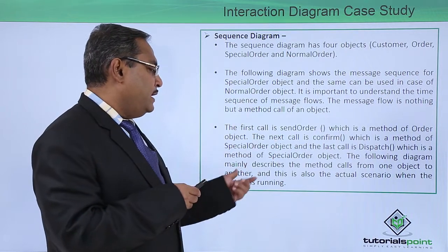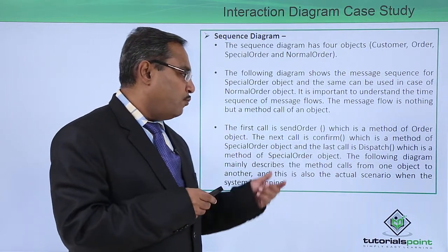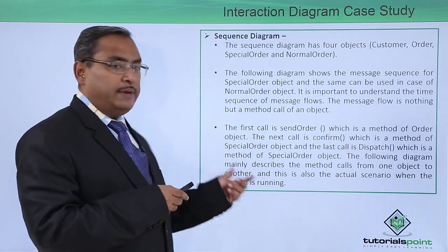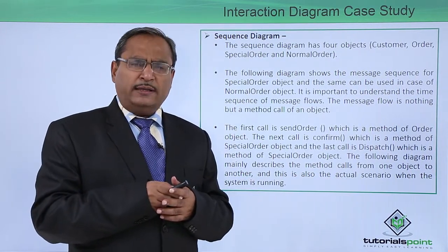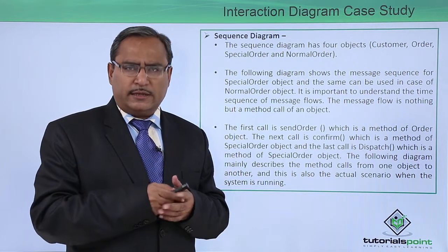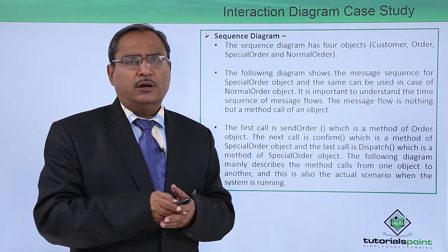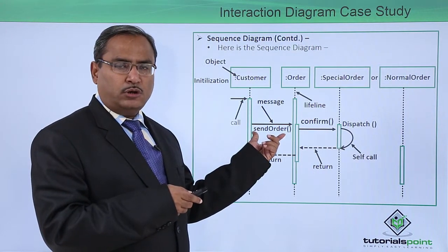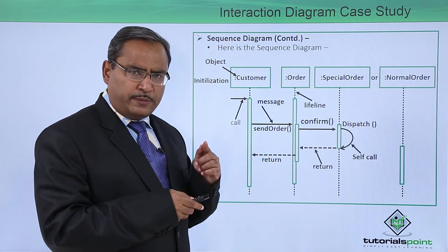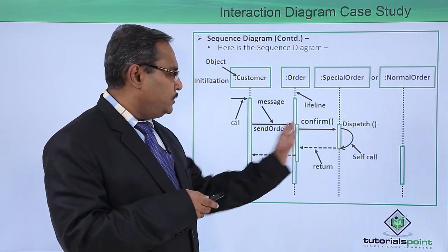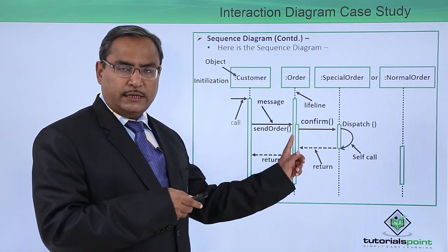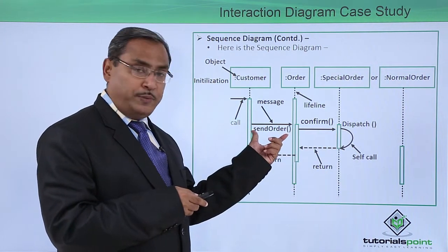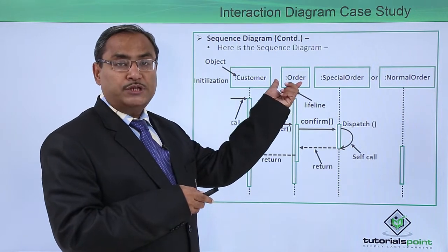The diagram mainly describes method calls from one object to another, and this is the actual scenario when the system is running. Always remember: from the source object to the target object, when a method is there — which is nothing but a message flowing — it should be the member function of the target object.